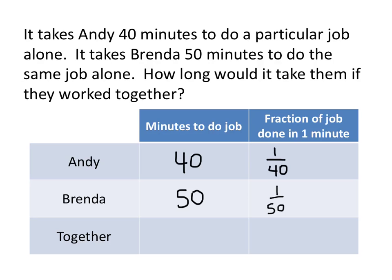Now together, we don't know how much time it takes them to do the job. So we'll just call that t. But what we do know, again thinking about what we talked about before, is that in one minute, they will get 1 over t. That will be the fraction of the job that they get done in each minute.